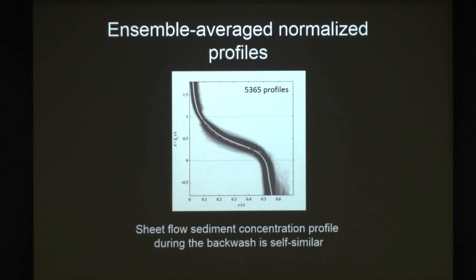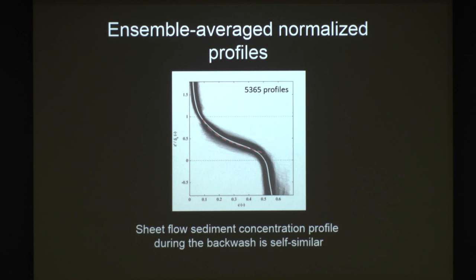The best part is that it's self-similar. If I take all of those profiles and non-dimensionalize z by normalizing by the sheet thickness, putting over 5,000 profiles on the same axis where one is the sheet thickness and zero is the bottom of the sheet layer - those are all the individual curves, the white curve is the mean, and the red curve is the fit using the power law plus linear fit. This tells me two things: first, if you don't have a CCP you can still estimate the concentration profile shape, and second, if I can estimate the sheet thickness, I know the concentration profile, and models exist that can predict sheet thickness from the flow field.